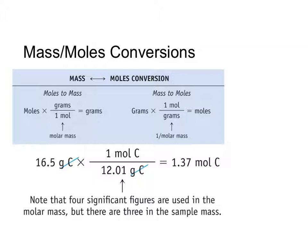Here we see an example worked out for us. In this example, we're given mass and we're trying to convert to moles. We know that we have 16.5 grams of carbon. Our molar mass of carbon is one mole per 12.01 grams. We're looking for moles, so that goes on top; grams of carbon goes below, and grams of carbon cancels out. We do the math — 16.5 divided by 12.01 — and we get 1.37 moles of carbon. Note the significant figures: four in our molar mass, three in our initial measurement, so our final answer contains three significant figures.